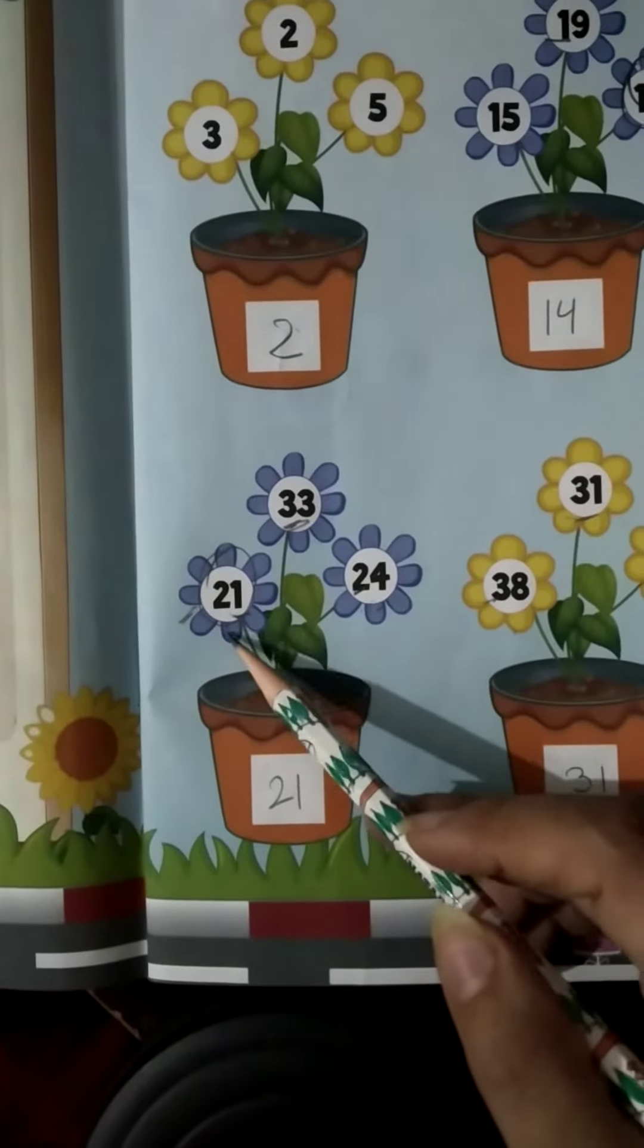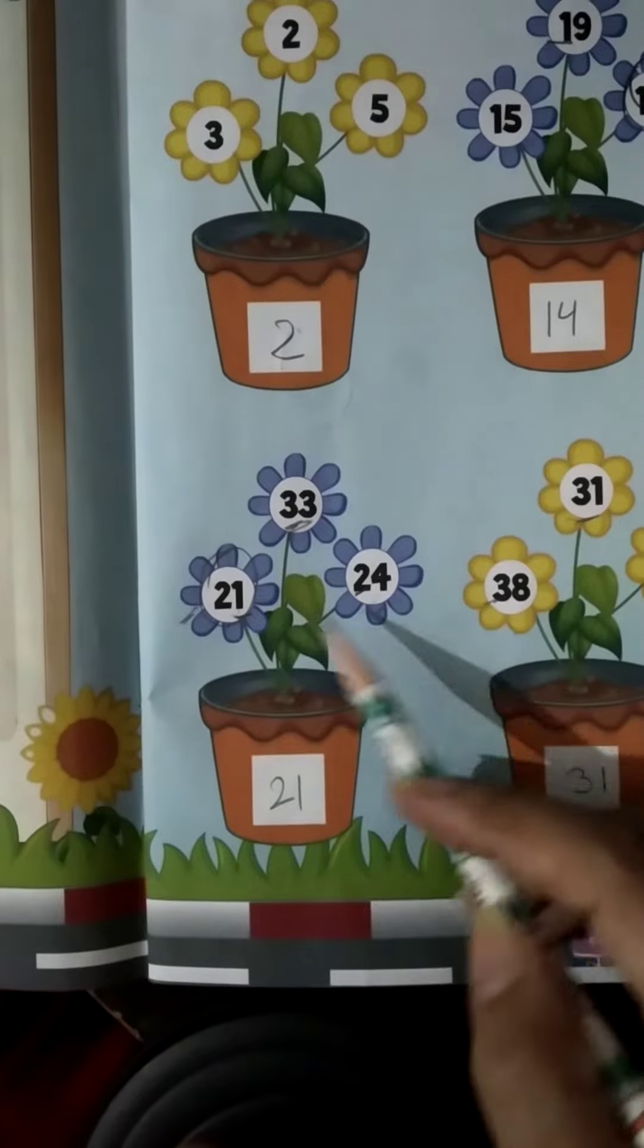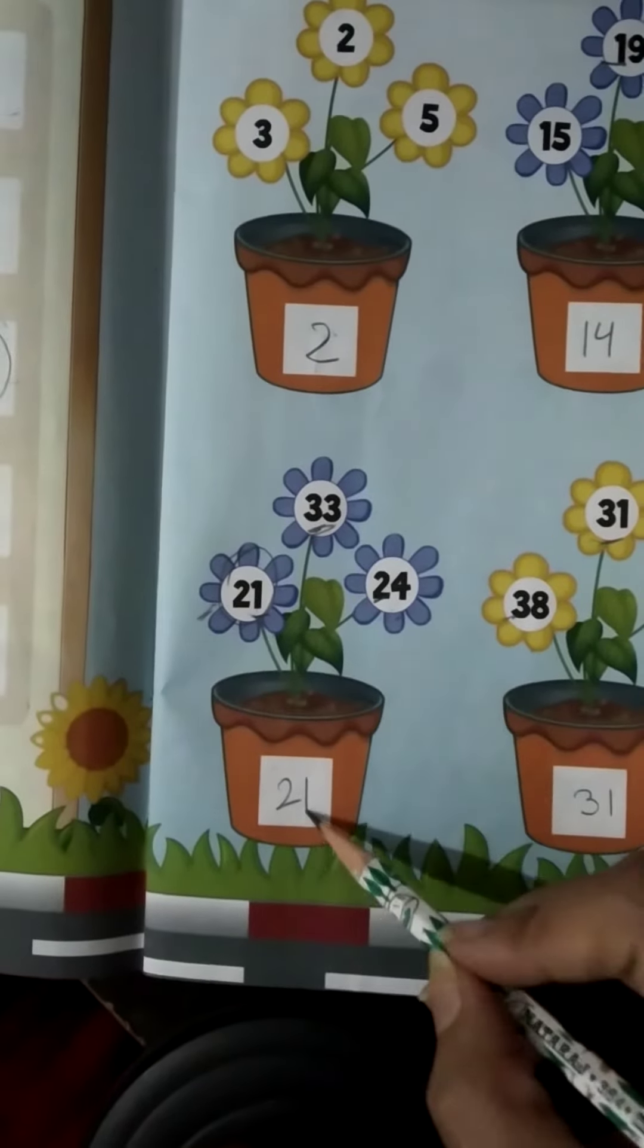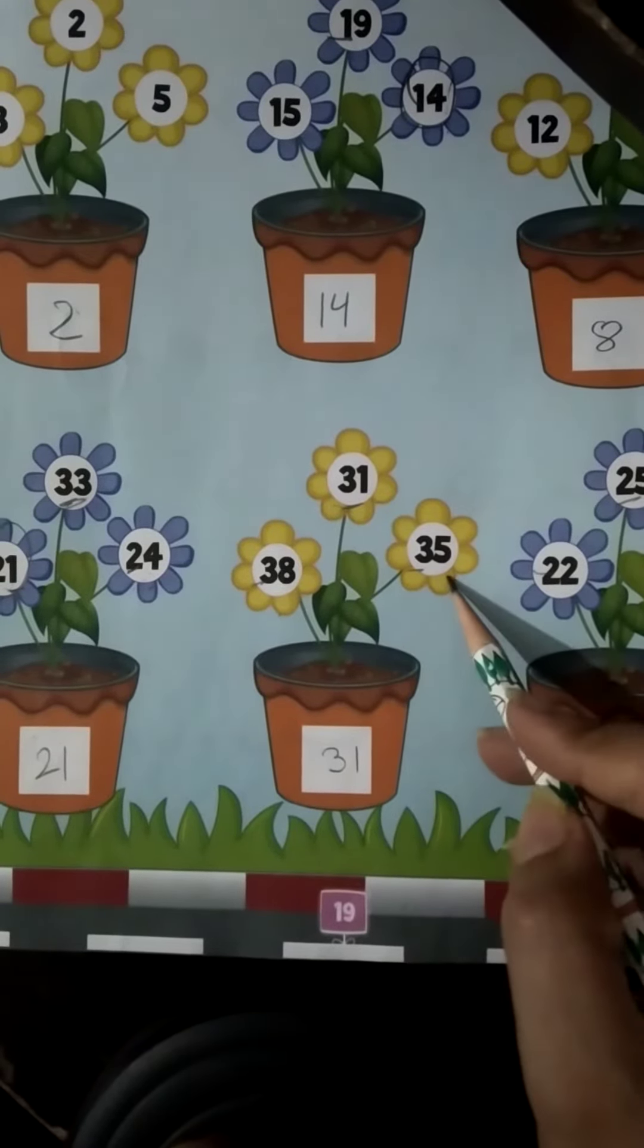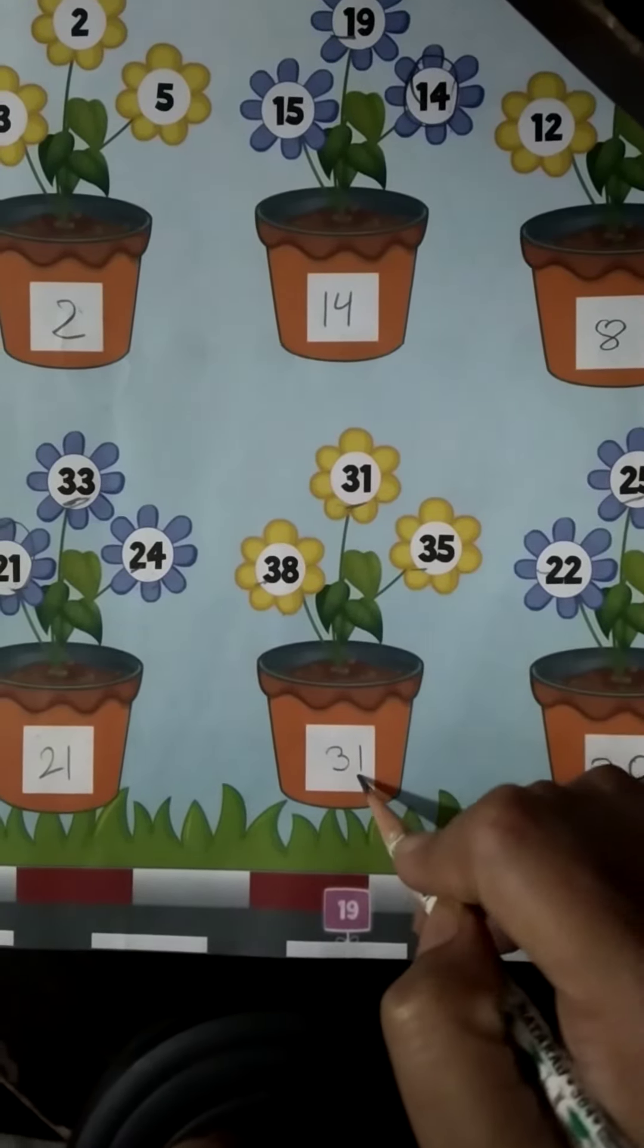Next pot, we have 21, 33, 24. Sabse pahle 21 aata hai, then we will write 21. 38, 31, 35. We will write here 31.